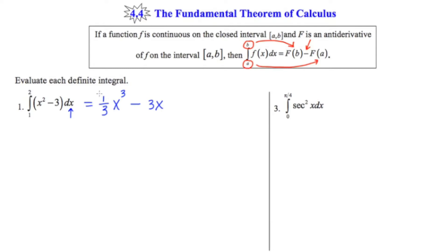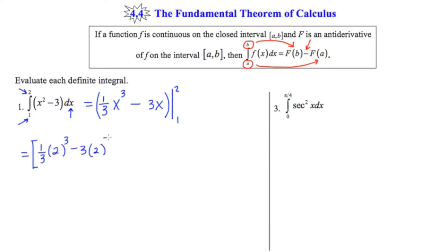Since this is a multi-term expression, I'm going to partition the whole thing off using parentheses. And I'm going to introduce a new notation, this bar here off to the right. At the bottom of the bar I'm going to put a 1, and at the top of the bar I'm going to put a 2, to reflect these limits of integration. My next step is going to be to substitute 2 into this expression, and then substitute 1 into this expression, and then find the difference between them both. When I substitute in 2, I get 1 third of 2 cubed minus 3 times 2. Then I substitute in 1, and I get 1 third of 1 cubed minus 3 times 1.